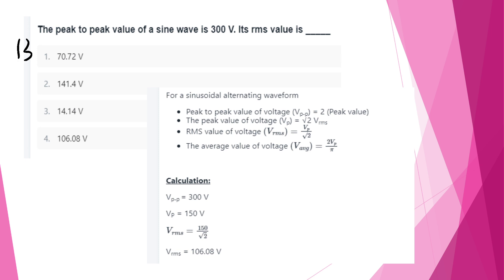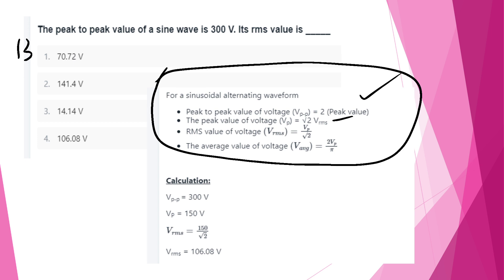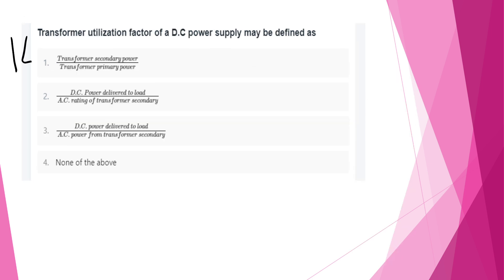The peak-to-peak value of a sine wave is 300V. Its RMS value is: Vpp = 2 × Vp, so Vp = 150V. Vrms = Vp/√2 = 150/√2 ≈ 106.08V. Option 4.